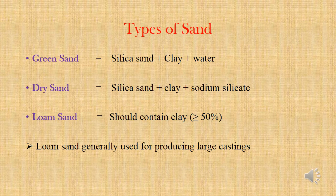The next type of sand is loam sand, which contains more than 50 percent clay. Loam sand is generally used for producing large castings.